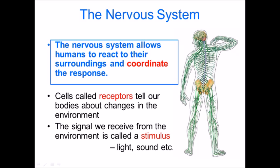Our nervous system enables us to coordinate a response to a change in our environment, and a nervous response is one that is very, very quick. So if there is an immediate change in the environment, it means that you can react to that quickly. That therefore promotes survival and hence why we have it.